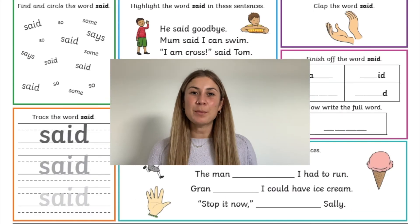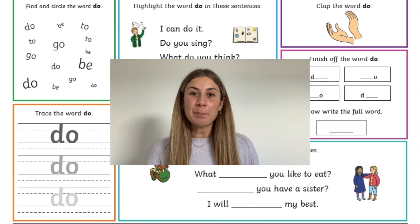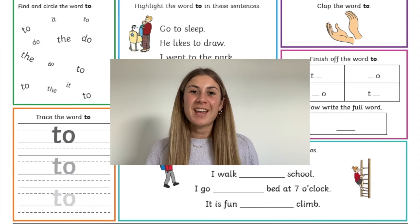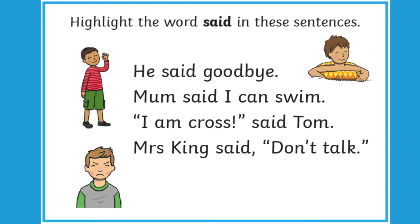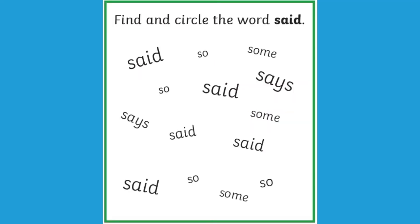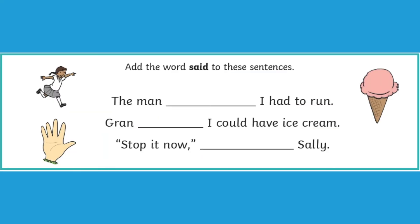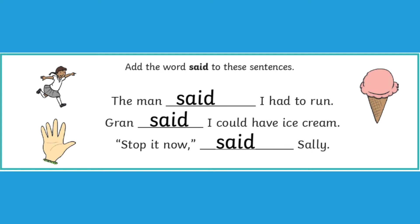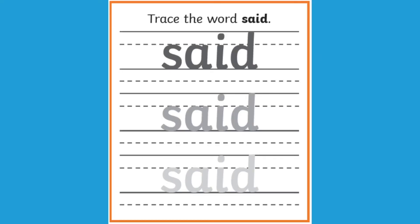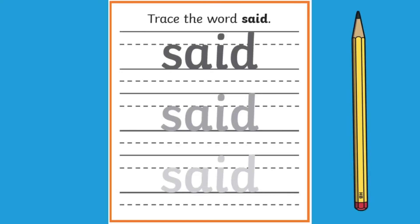Every mat contains the same question types, so let's take a look at an example of the types of questions that your children will come across. Questions include highlighting the common exception word in sentences, circling all the common exception words that they can see, adding that particular common exception word into a sentence — which is an opportunity to practice writing it — and they also get a chance to practice tracing the word.